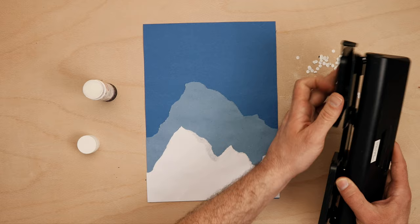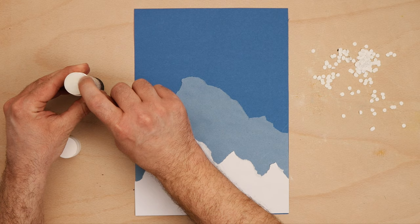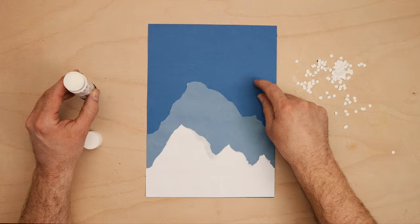For the snow, empty the contents of a hole punch, or if it's empty, punch loads of holes with a scrap bit of paper. Of course, you don't need to use these. White sticker dots work just as well, or a bit of paint, a bit of crayon, whatever you have available.